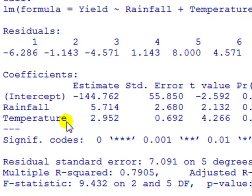And the interpretation of the coefficient temperature is similar, it's as follows. Now units of temperatures in Fahrenheit. If the temperature increases by one degree Fahrenheit, the model predicts that yield will increase about three bushels per acre, holding the rainfall fixed.